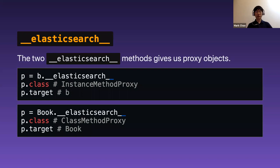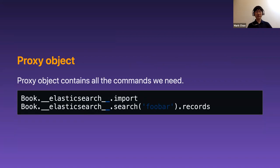By including those modules, we get two Elasticsearch methods — the underscore elasticsearch methods. This method returns the proxy mentioned earlier. So for a book instance, if we call underscore elasticsearch, we get an instance method proxy whose target will be the book itself. And if we call underscore elasticsearch on the book class, we get a class method proxy. The proxy object is where all the search-related logic resides, and we can call all the commands on the proxy object.